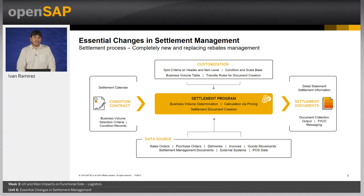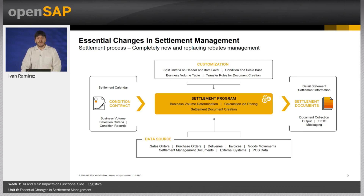Calendar-based settlement, accrual conditions that can be defined independent from the settlement conditions, and intuitive data entry of settlement information with full transparency of involved documents. In settlement management, you can find customization options to specify split criteria on header level leading to separate settlement documents for different values, and split criteria on item level leading to separate items in the settlement documents. Achieve a detailed settlement overview on complex settlement scenarios, such as ALB and graphical view, into settlement documents and its FI status.